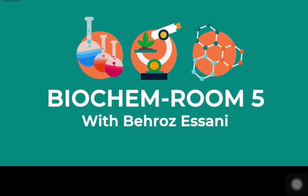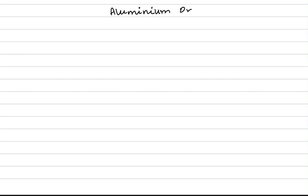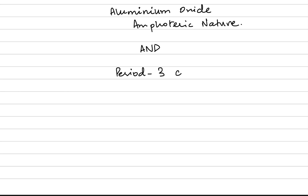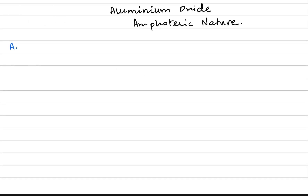Welcome back to another video. In today's video we're going to be talking about aluminium oxide's amphoteric nature, and we are going to talk about the period three chlorides. Our objective is to have another look at the amphoteric oxides and then cover period three chlorides.